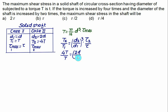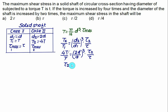Solving: τ2 = 4τ/8 = τ/2. The maximum shear stress when the torque is quadrupled and diameter is doubled equals τ/2. Choice C is correct.